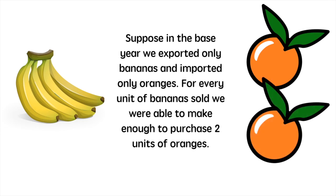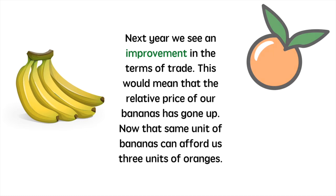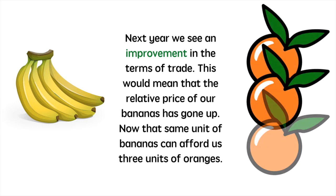Next year, we see an improvement in the terms of trade. This would mean that the relative price of our bananas has gone up. For some reason, we are able to sell bananas at a higher price, the price of oranges has remained constant, and now that same unit of bananas can afford us 3 units of oranges. All this means is that the increase in export prices has outpaced the increase in import prices enough that we are able to afford more oranges given the difference between the two sets of prices.